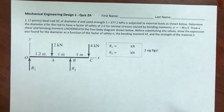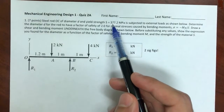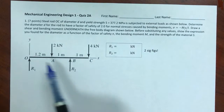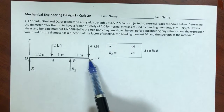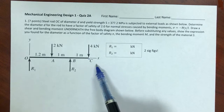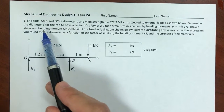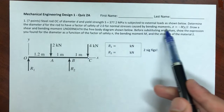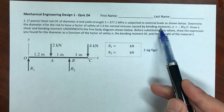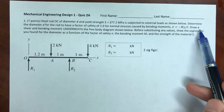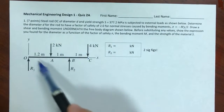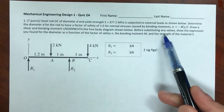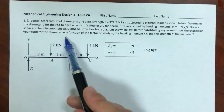Problem one: a steel rod OC of diameter D and yield strength 377.2 megapascals is subjected to external loads as shown. Determine the diameter D for the rod to have a factor of safety of 2 for normal stresses caused by bending moment only. Draw a shear and bending moment diagram underneath the free body diagram.